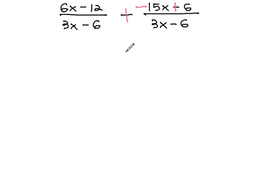Now that it's an addition problem, we also have a common denominator of 3x minus 6. Let's keep that denominator, and now we can add the numerators. 6x minus 15x is negative 9x. Negative 12 plus 6 is negative 6.